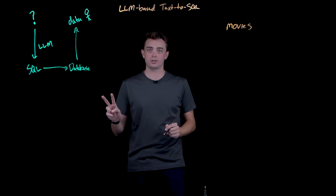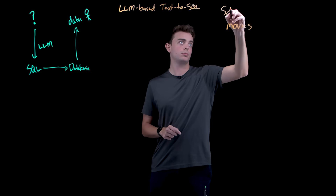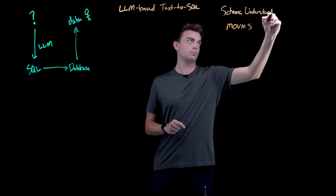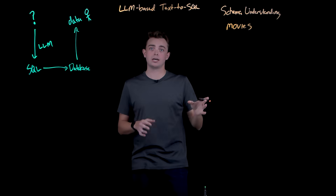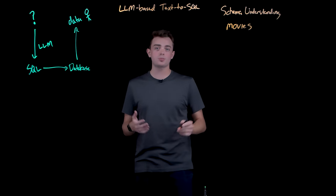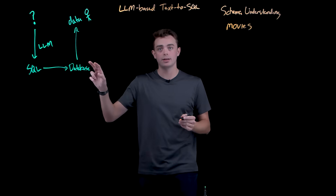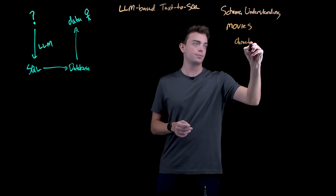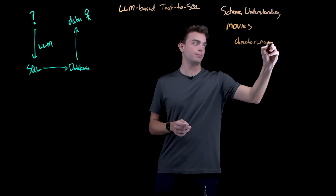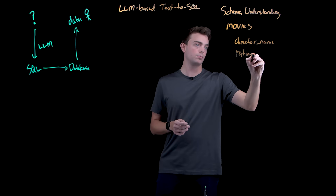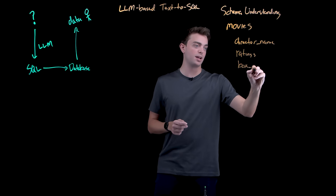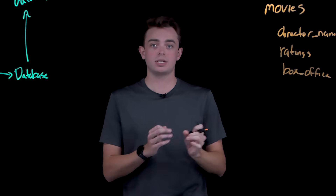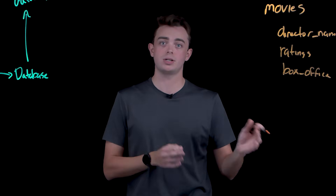We'll do this in two parts. Part one is schema understanding. The AI needs to understand what our database looks like. We can solve this by providing the LLM the database schema — the structure of your tables and columns — things like director name, rating, or maybe the box office and how it did on the opening weekend. The AI needs to learn your technical database structure.